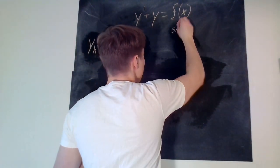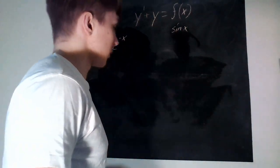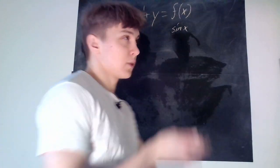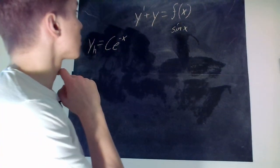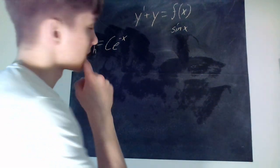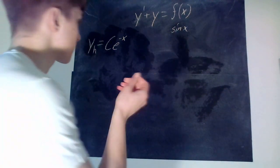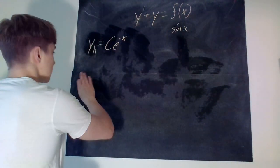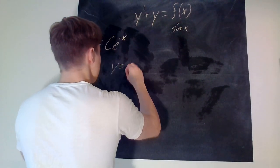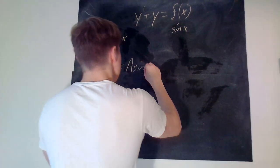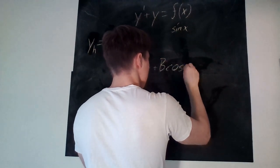The next case is when f of x is equal to sin x. We know that the derivative of sin x is cos x, so we can't just put sin x in there. So we guess some constant times sin x plus some constant times cos x. We'll go with that — y is equal to a times sin x plus b times cos x.